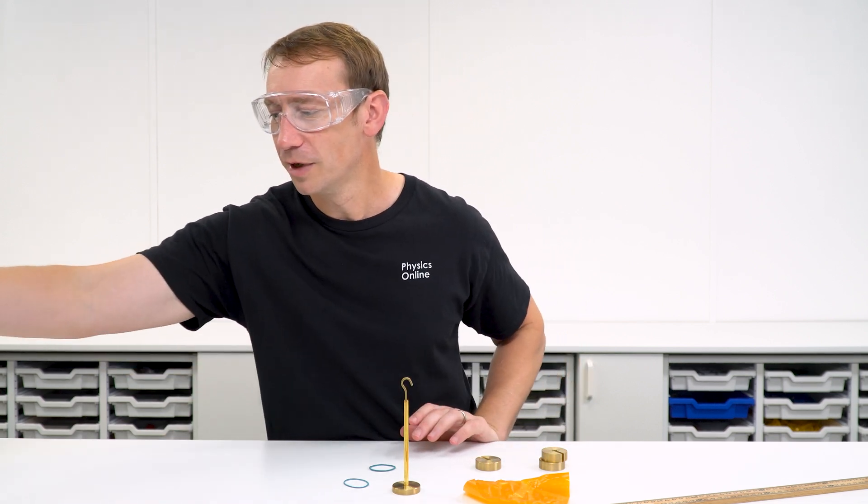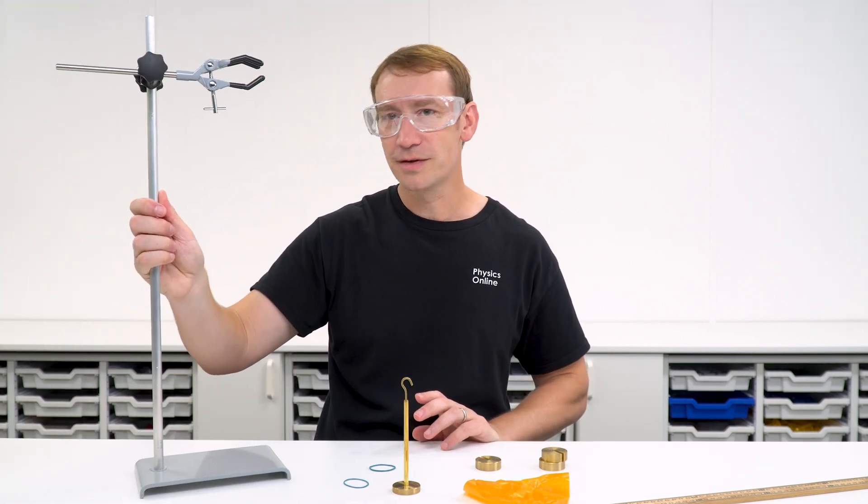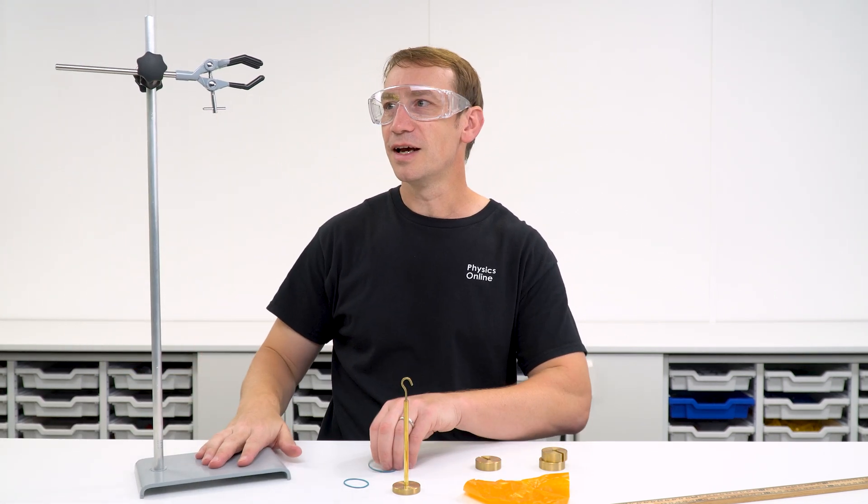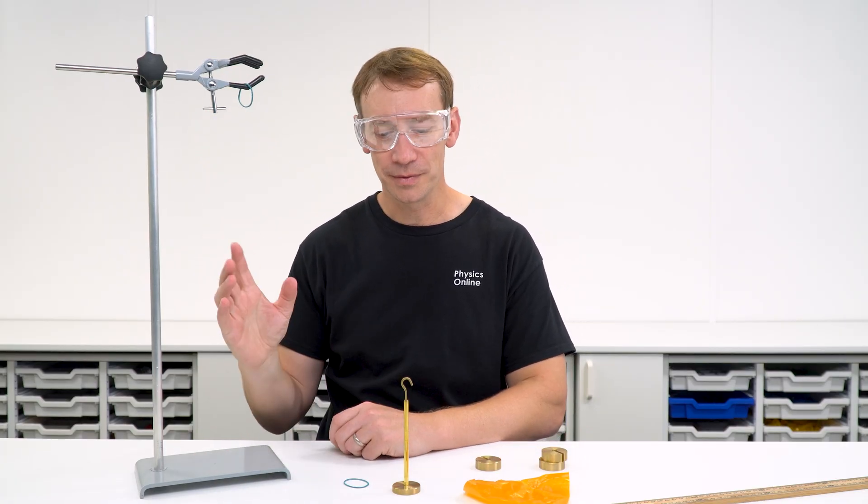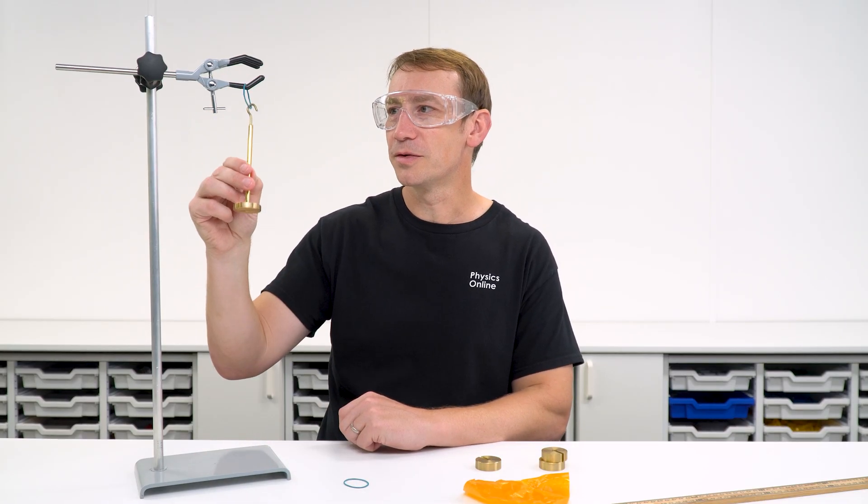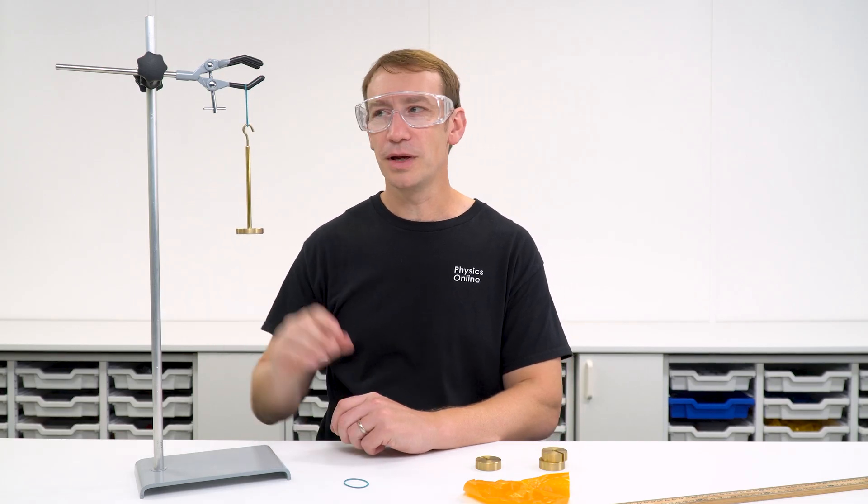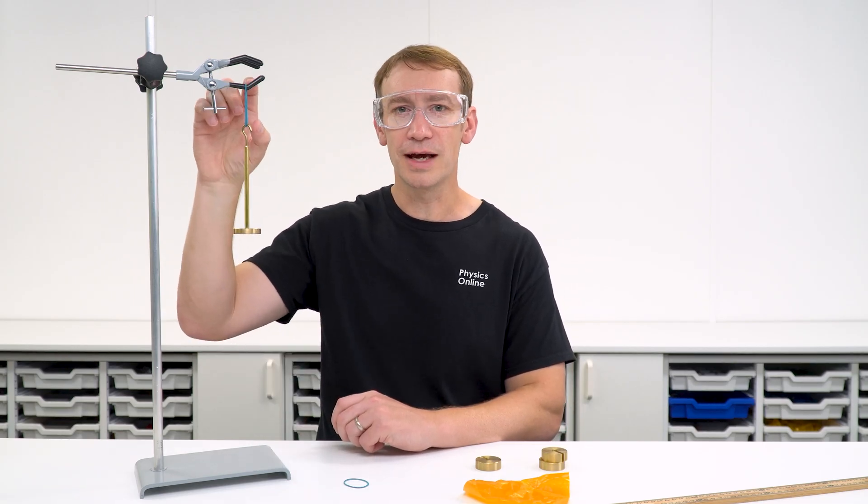So let's have a look at rubber first of all. In the simplest format we've got our retort stand and I'm going to just hang a rubber band from this part of the clamp. We can then apply a load to it and we can measure the total length of that.